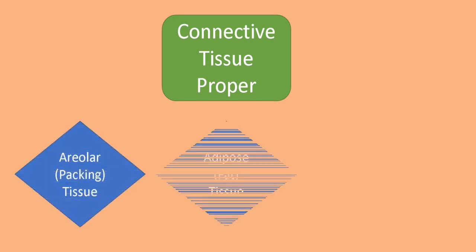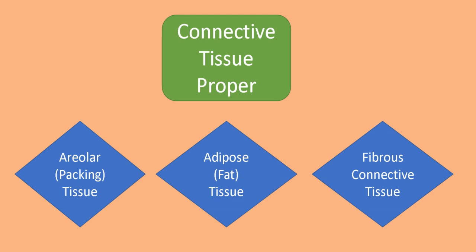Connective tissue proper has three kinds: areolar or packing tissue, which is most widely spread and occurs beneath the epidermis of the skin; adipose or fat tissue, found under the skin and around the kidneys, mainly storing fat; and fibrous connective tissue, made up of elongated cells called fibers, including tendons, which connect muscle to bone, and ligaments, which are present between two bones.